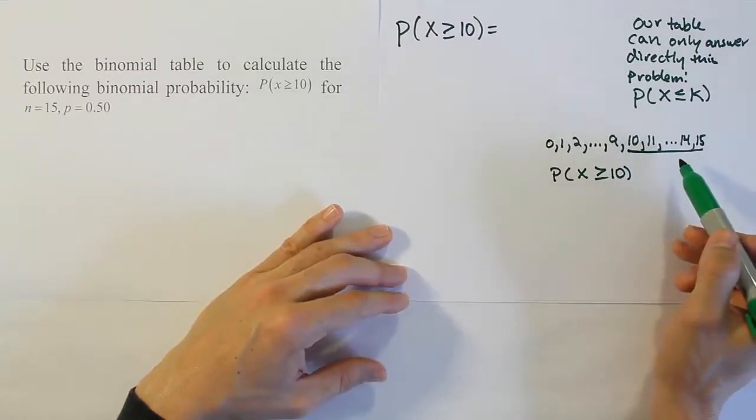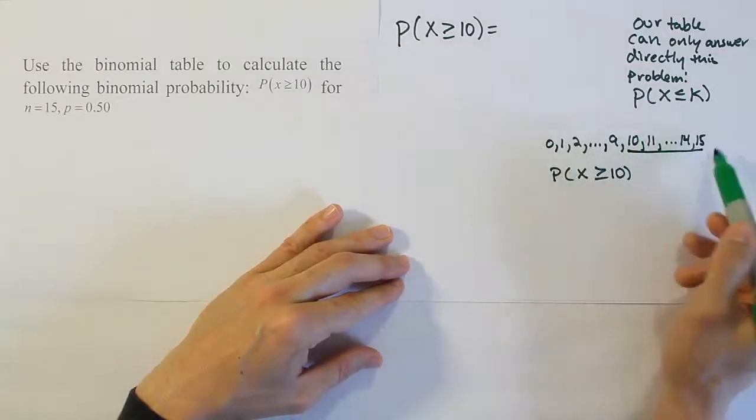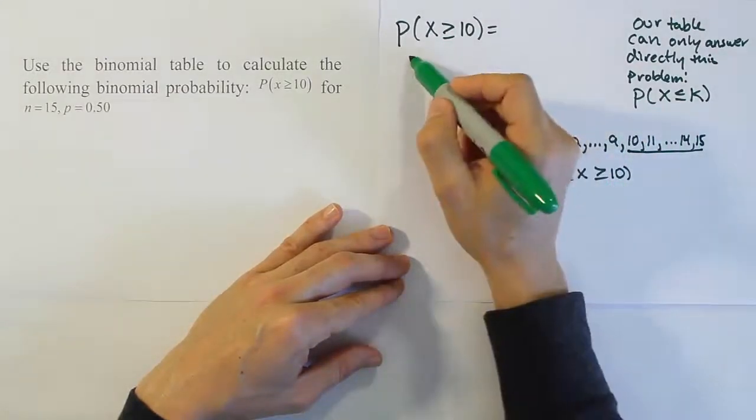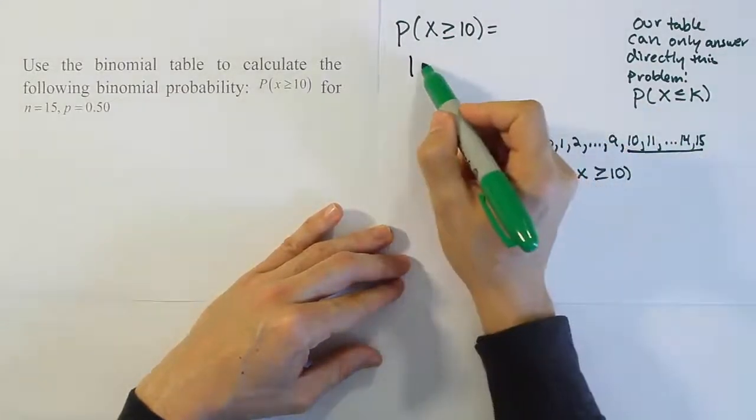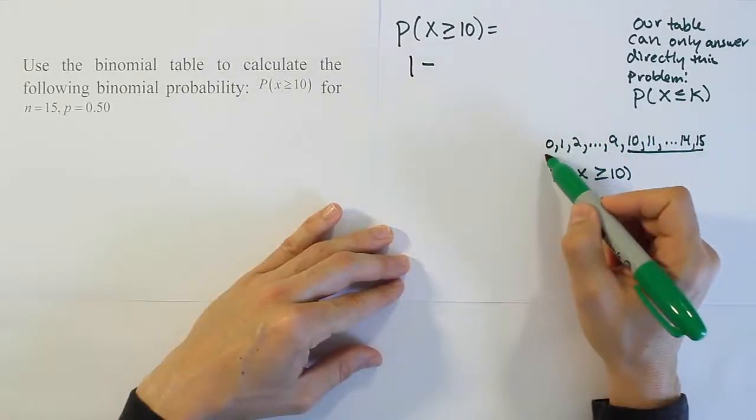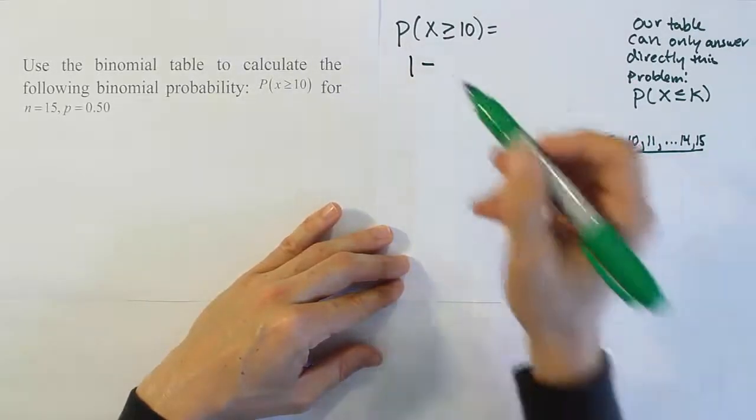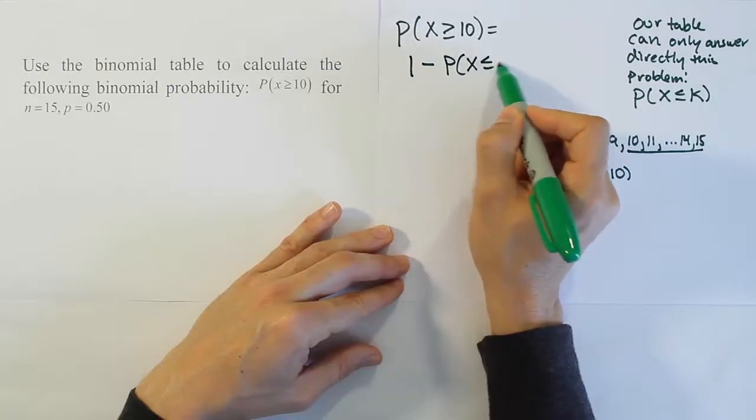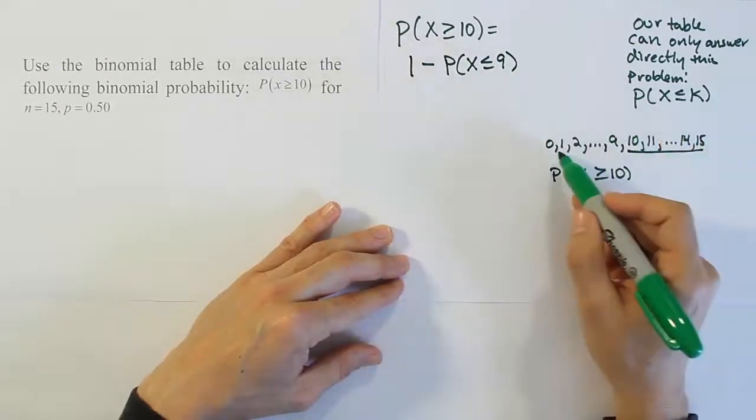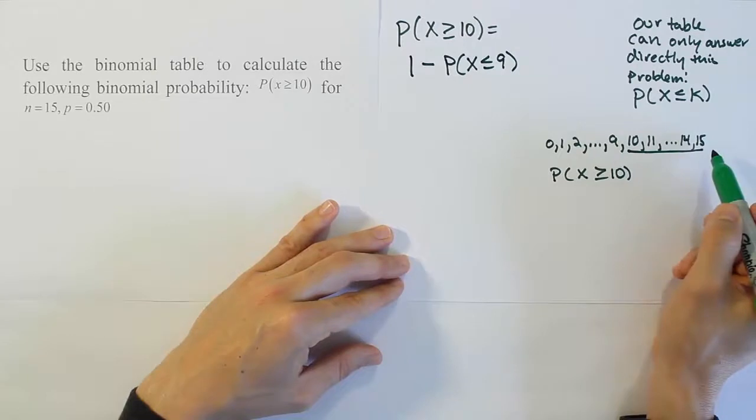And the way to trick it is to say, well look, all the probability of all these events adds up to 1. So if I subtract from 1 this part, the part I don't want, which is basically the probability that x is less than or equal to 9, then I would be left with this part from 10 to 15.